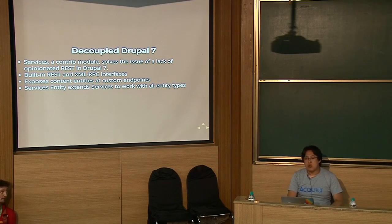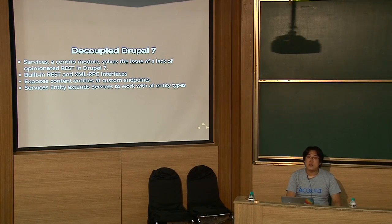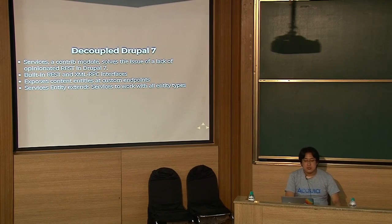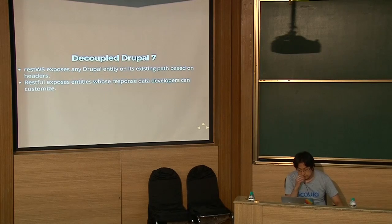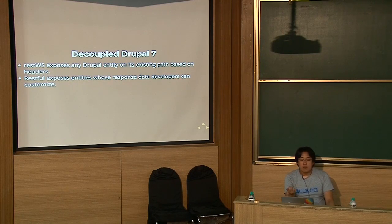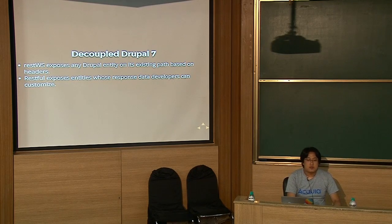In Drupal 7, there's no opinionated REST layer out of the box — when you install Drupal 7, there's no way to use it as a REST API. There's the Services module, which is a very popular solution — it has built-in REST and XML-RPC interfaces and exposes content entities at configurable endpoints. There's also the Service Entity module which extends it to include all entity types. REST WS uses the same path but differentiates responses by headers. RESTful exposes entities and lets you cater data to the specific needs of your front-end.